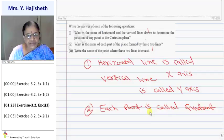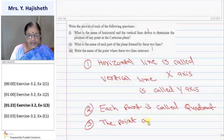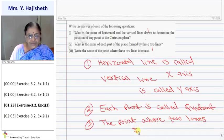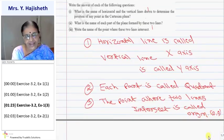Third question: write the name of the point where these two lines intersect. The point where the two lines intersect is called the origin, and whose coordinates are (0, 0).